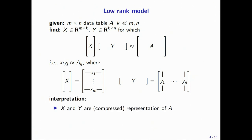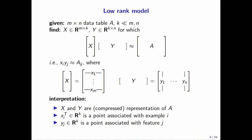What it means is that we've got a compressed representation for our data table A. X and Y are smaller than A, they're numeric, and they're approximately equal to A. Furthermore, the rows of X and the columns of Y give you representations for every example and for every feature — one row of X for every example, and one column of Y for every feature. These are real-valued numeric vectors. We can cluster them, we can plot them, we can do anything we want with them. They're much more interpretable and a lot easier to work with.